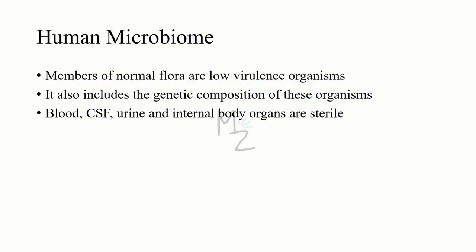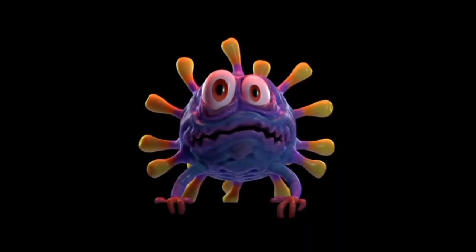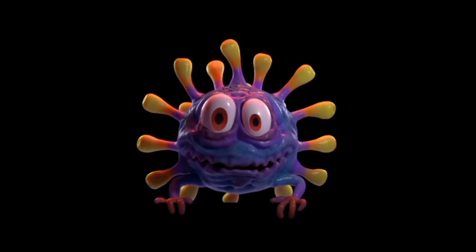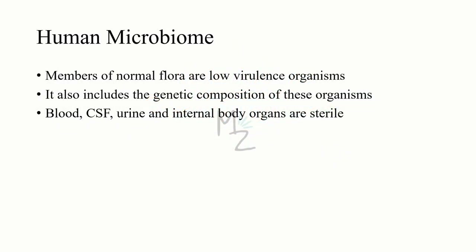Members of normal flora are low virulence organisms. Virulence is the severity and harmfulness of a disease. So normal flora organisms are of low virulence, which means their ability to cause disease is very low. Human microbiome also includes the genetic compositions of these organisms. For example, if a virus is part of the human microbiome, its DNA, or if it's an RNA virus, its RNA, will also be part of the microbiome.